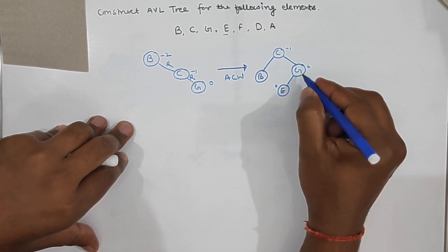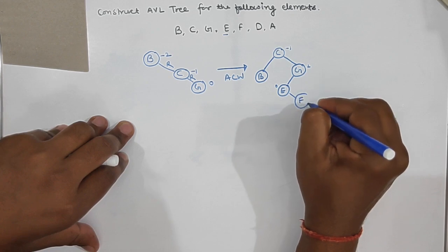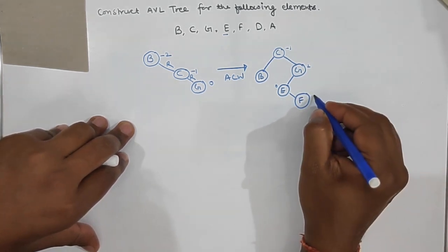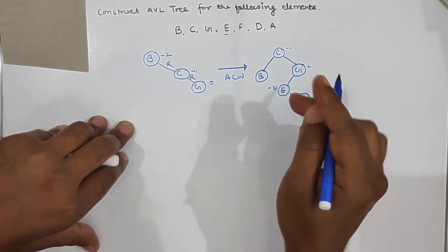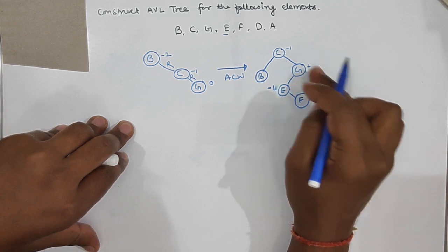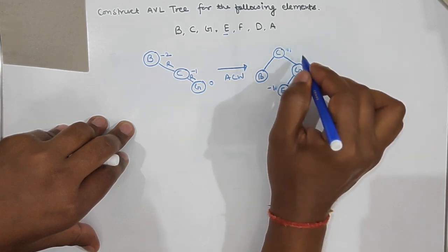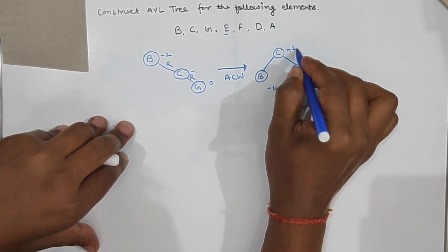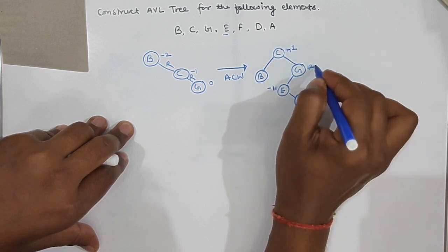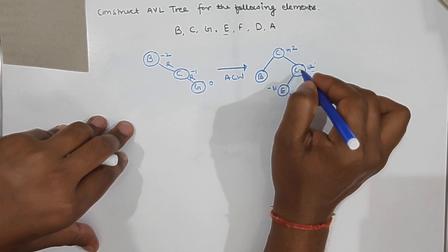F is less than g and greater than e, so f is inserted here. Check the balance factor: f is 0, e is 0 minus 1 = -1, g is 2 minus 0 = 2, and the root has balance factor 1 minus 3 = -2. Going from leaf to root, the first violation is at node g, so we balance at node g first.